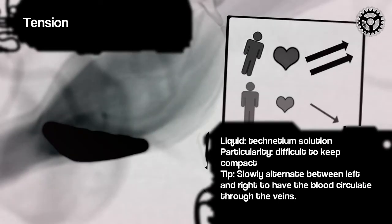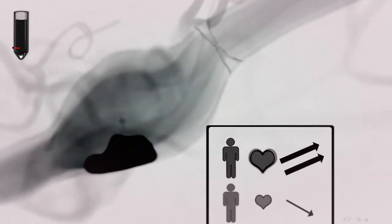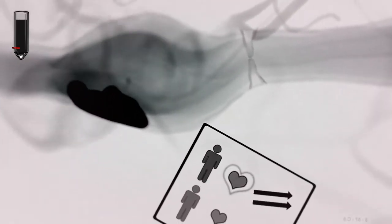Tension liquid tectium, so solution. The instructions say to slowly alternate between left and right to have the blood circulate through the veins. Oh, we're going to the heart, okay.